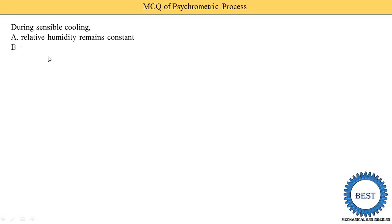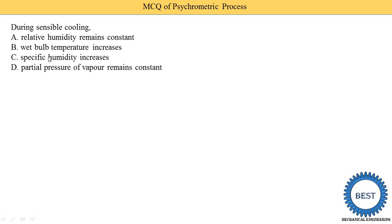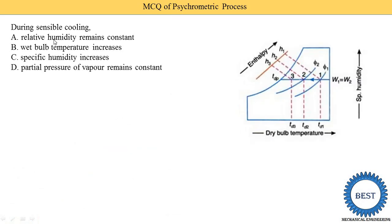During sensible cooling: relative humidity remains constant, wet bulb temperature increases, specific humidity increases, or partial pressure of vapor remains constant? 'Relative humidity remains constant' is a wrong statement because it changes from φ1 to φ2. 'Wet bulb temperature increases' is also wrong — as we studied earlier, wet bulb temperature decreases. Specific humidity is constant, not increasing. So by default, option D is correct: partial pressure of water vapor remains constant.